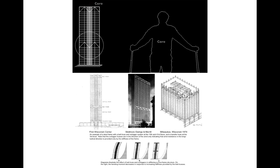First Wisconsin Center in Milwaukee by Skidmore Owings and Merrill is a prime example. Belt trusses or outrigger trusses appear several stories up, then 10 to 15 stories up, and at the very top. Each stiffens the building frame and prevents drift, but also transfers loads between the core and exterior outrigger columns—making the outside columns, which are most efficiently placed to resist wind, do most of the work.